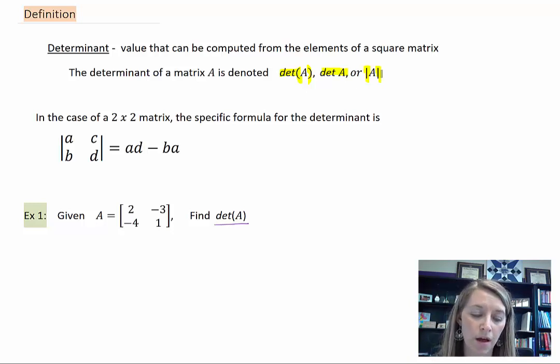First we're going to talk about the determinant of 2 by 2 matrices because they are the easiest. The formula is very easy. You just multiply the diagonals, A times D, and you subtract the other diagonal, B times C. That gives you that single value or that determinant of that square matrix. I have an example here.